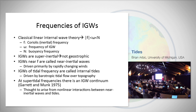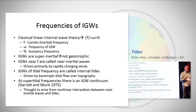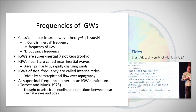According to classical linear internal gravity wave theory, the frequency omega is greater than or equal to the Coriolis frequency and less than the buoyancy frequency — so they're super-inertial and not geostrophic. If the frequency is near F, they're called near-inertial waves, driven primarily by rapidly changing winds. If they have tidal frequency, they're called internal tides, driven by barotropic tidal flow over topography.